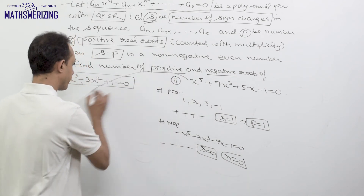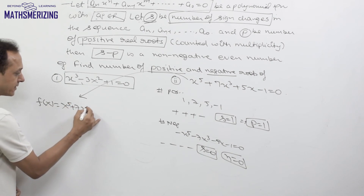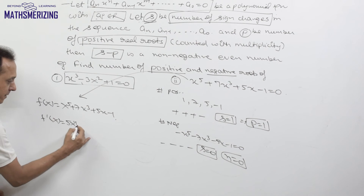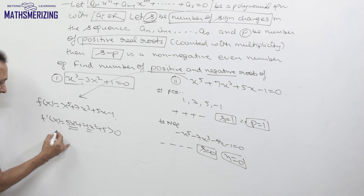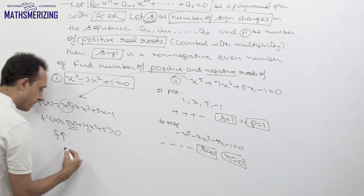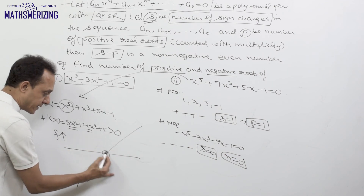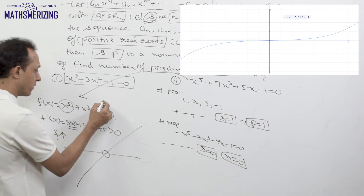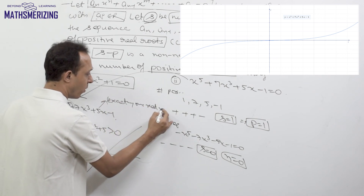We can also use calculus to verify this. Let f(x) = x⁵ + 7x³ + 5x - 1. Differentiating gives f'(x) = 5x⁴ + 21x² + 5, and all terms are positive, so f'(x) > 0. This means f(x) is a strictly increasing function. Since the degree is odd, this polynomial starts from minus infinity and increases, so it intersects the x-axis at exactly one point. Therefore this equation has exactly one real root.